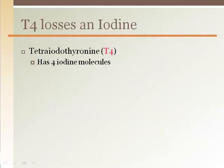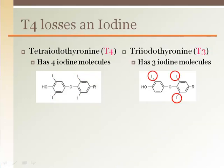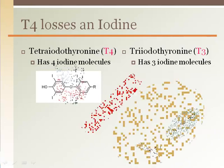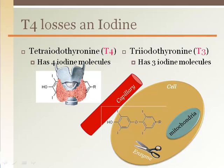T4 and T3 are each named for how many iodine molecules they have attached. Tetraiodothyronine has four iodine molecules and triiodothyronine has three iodine molecules. T3 is the bioactive form most readily utilized by our body's cells to increase mitochondrial metabolism. Since the thyroid gland makes mostly T4 and very little T3, each cell must take in T4 and use an enzyme to cut off an iodine to make its own T3.